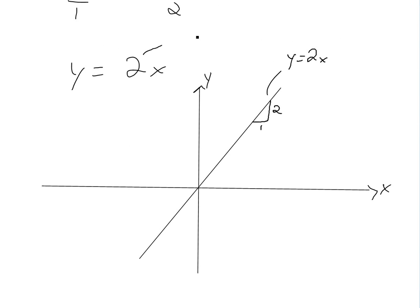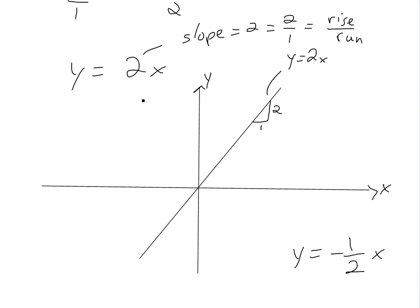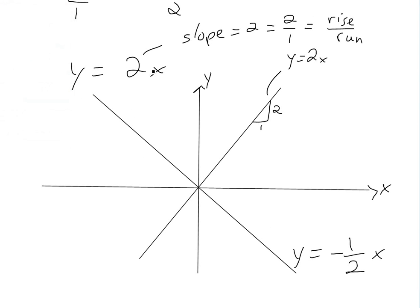So if we were to do the negative reciprocal of it — if we were to draw the line with slope negative 1 over 2x — so y is equal to negative 1 over 2x. If you were to graph this one, it would look something like this, and where this is actually perpendicular to the original line. This is the curve here.